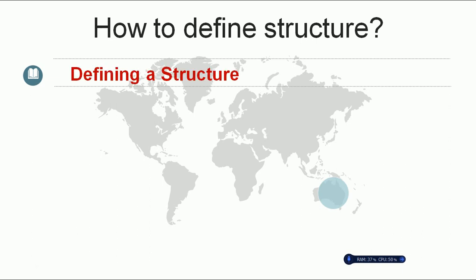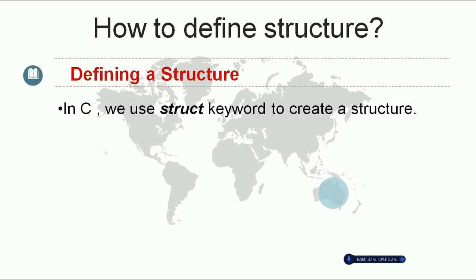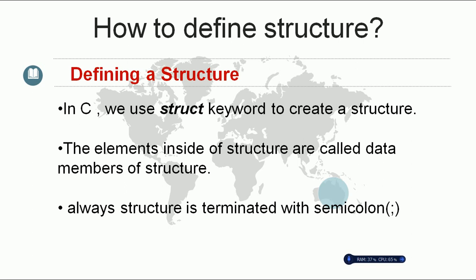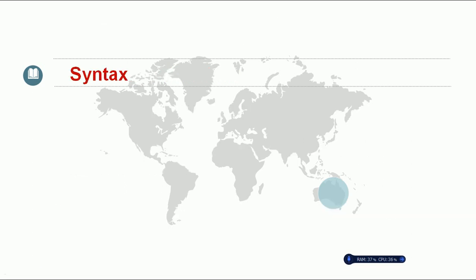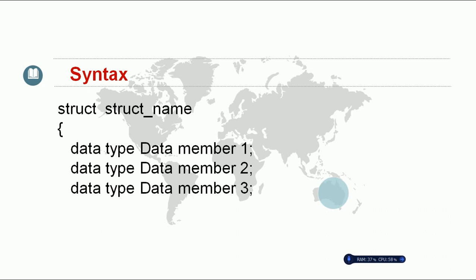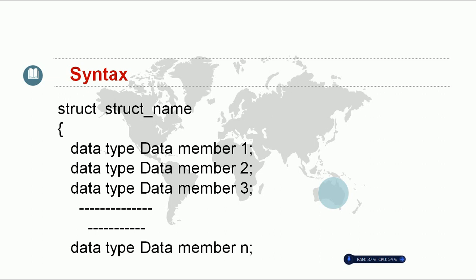We'll see how to define a structure. In C programming language, we use the struct keyword to create a structure. The elements created inside a structure are called data members. Always remember, a structure definition is terminated with a semicolon. The syntax uses the struct keyword followed by the structure name, an opening curly brace, and inside we define all data members — for example: data_type data_member_1, data_type data_member_2, and so on up to data_member_n.